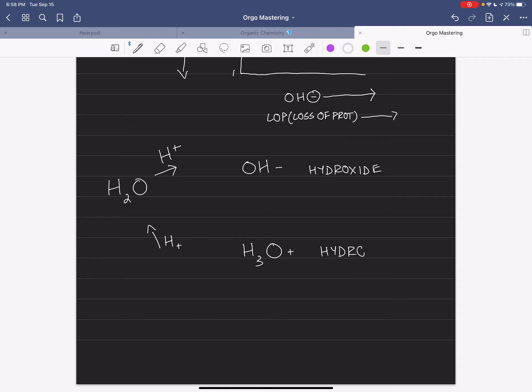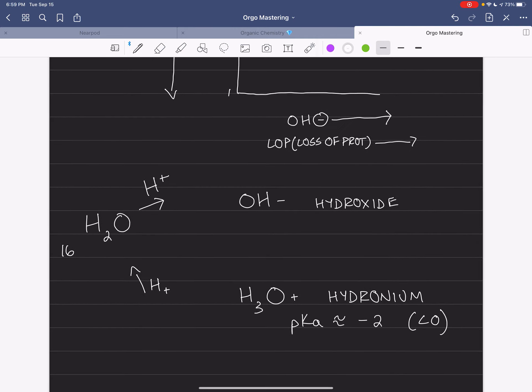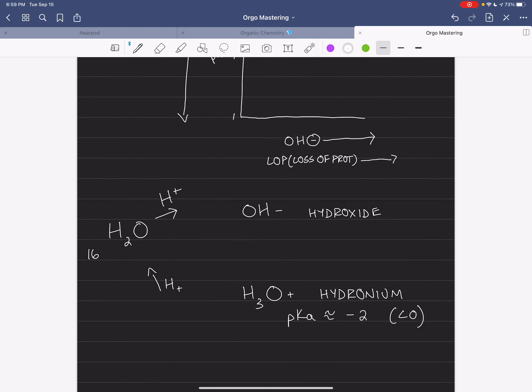Now hydronium has a very low pKa. And a pKa basically is a way to distinguish and to classify acidity and strong acids. So a low pKa is a strong acid. And hydronium has a pKa of about negative 2, less than 0, it's extremely acidic. Water has a pKa of about 16.